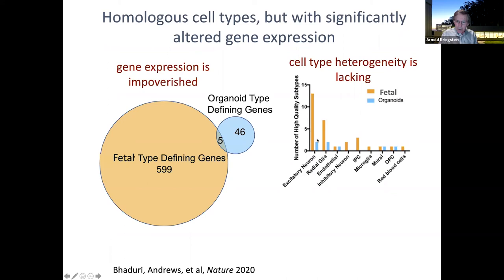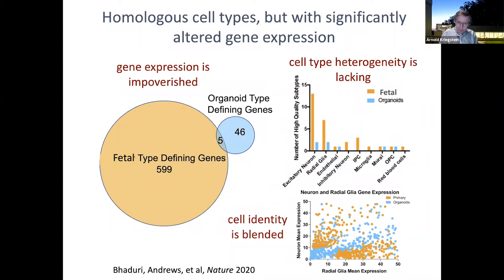Perhaps most worrisome is a blending of cell identity. In fetal tissue, radial glial gene expression and neural gene expression don't overlap — they're very distinct. But in organoids, radial glia express neuron genes and neurons express radial glial genes, creating blended identity. About 20 to 30 percent of genes are shared in ways not found in primary tissue.